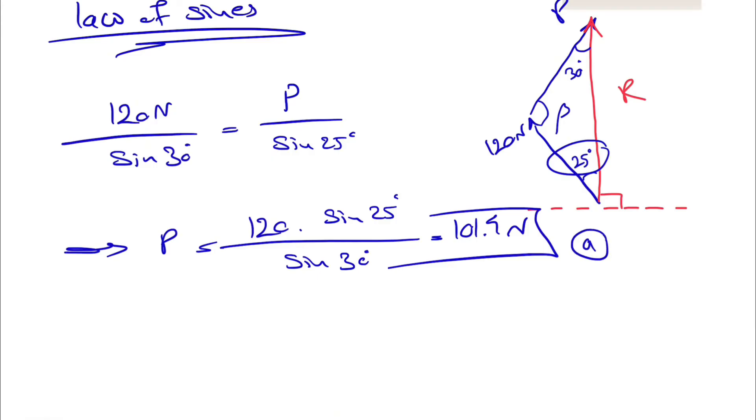In the second part we need to find the magnitude of the resultant. If you want to use the law of sines, we have to have beta in order to find R.